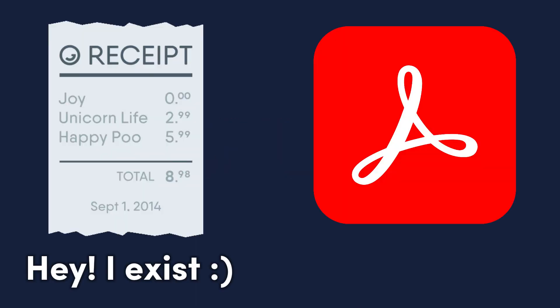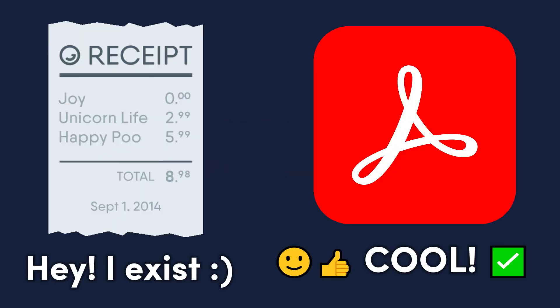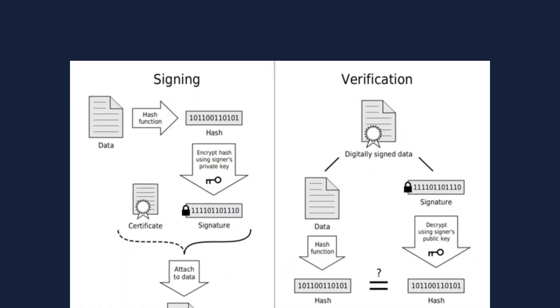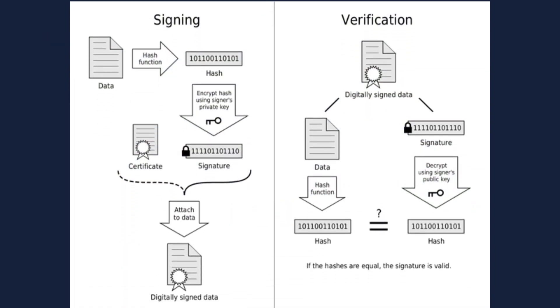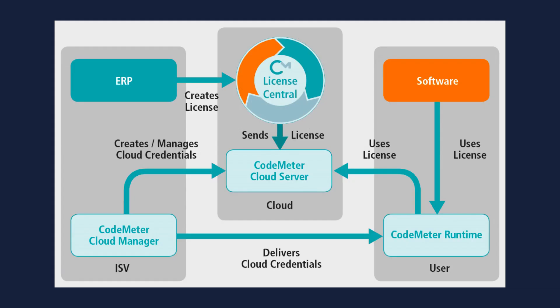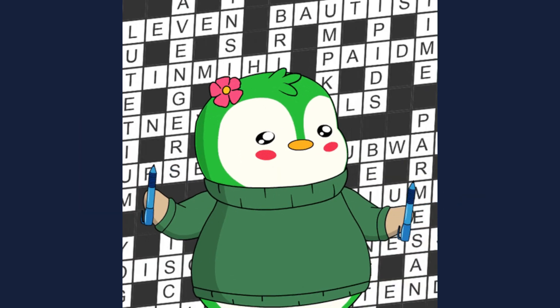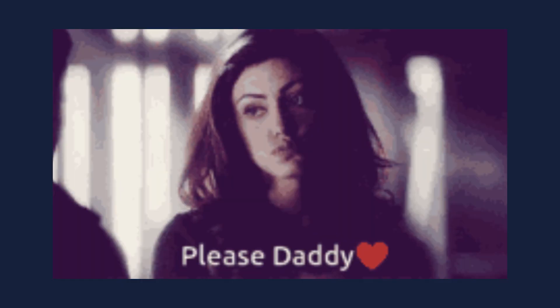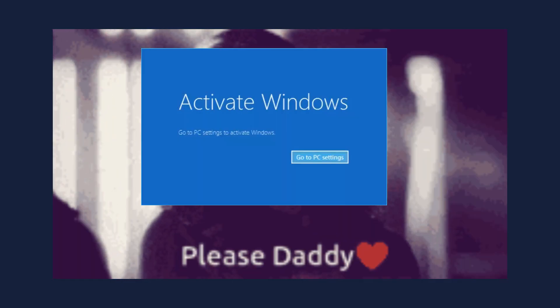When you activate software, you're basically showing it your receipt. Some programs send your license key to a server for verification, while others check it with built-in algorithms. Seems airtight, right? Nope. Hackers look at this process like a puzzle begging to be solved.